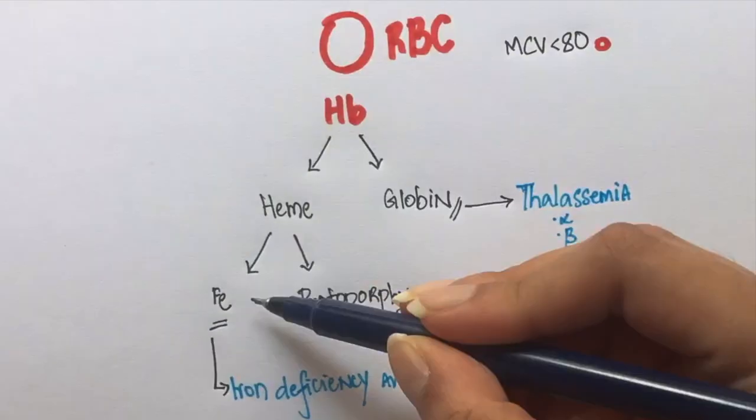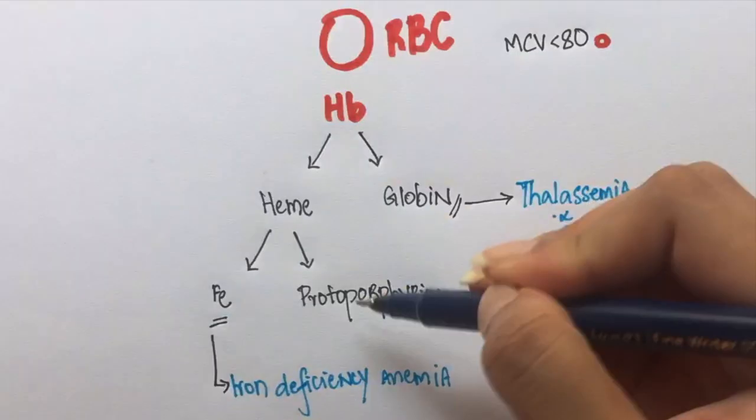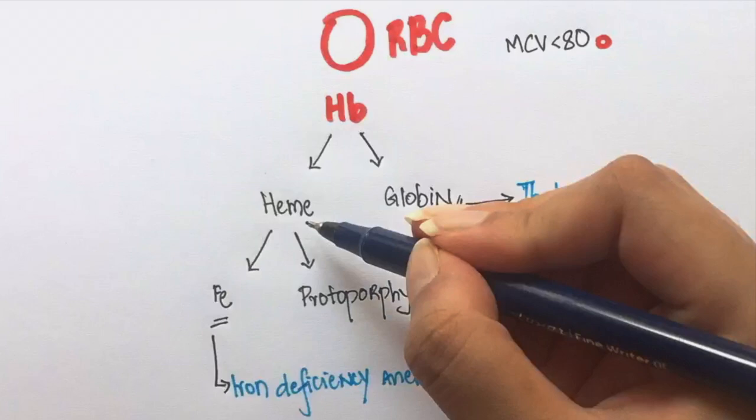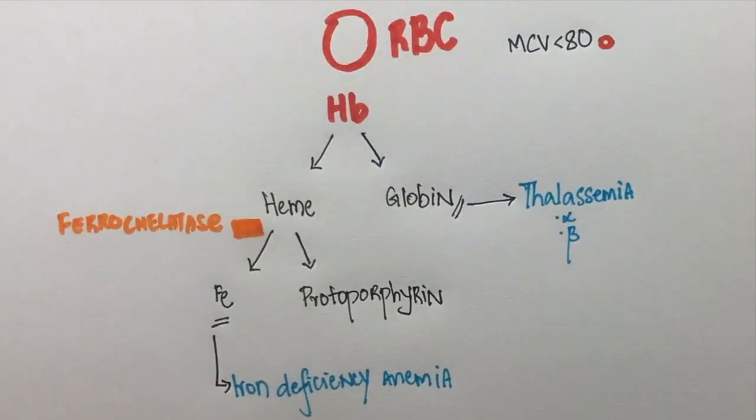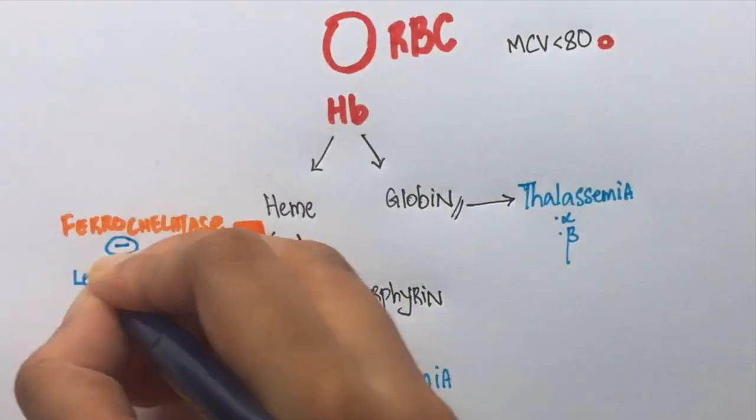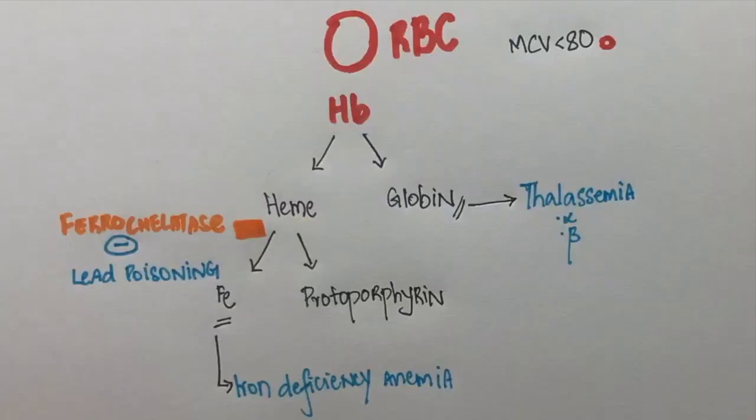Iron and protoporphyrin combine to give rise to heme. This step takes place in the presence of ferrochelatase. Increased lead levels inhibit this step. This is how lead poisoning can cause microcytic anemia.